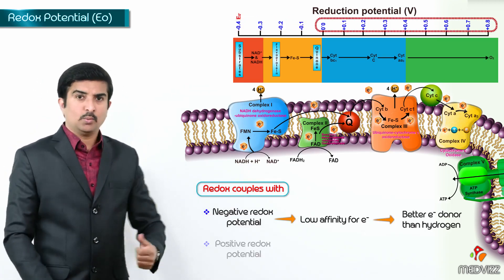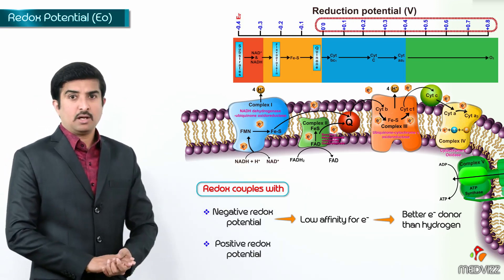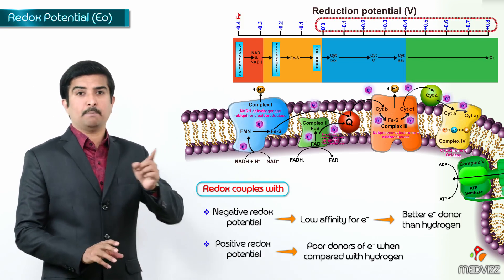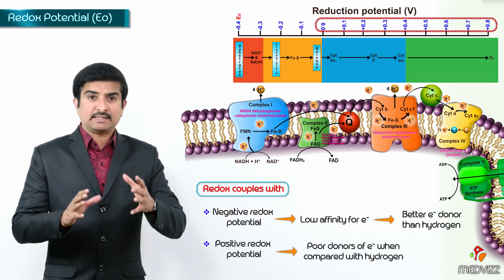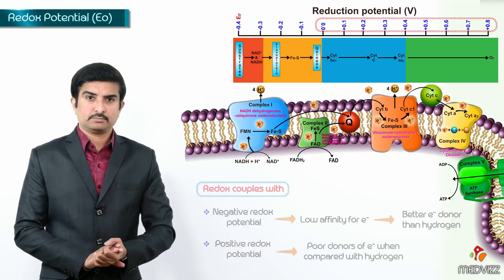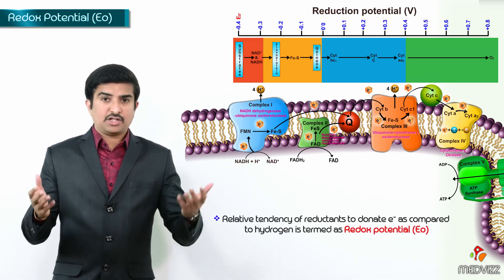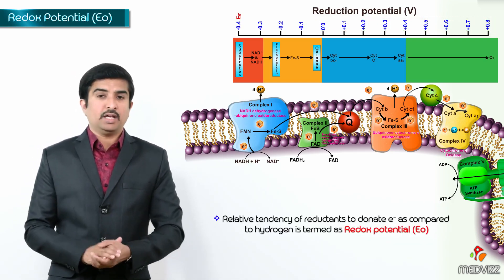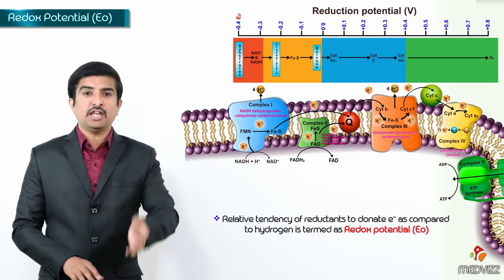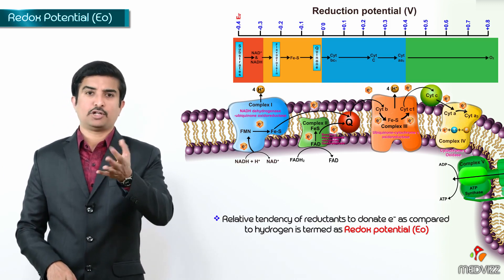And those with a positive redox potential are considered to be poor donors of electrons when compared to the hydrogen. This is how we will compare these reactants. Thus, the relative tendency of the reductants to donate electrons as compared to hydrogen is termed as redox potential.